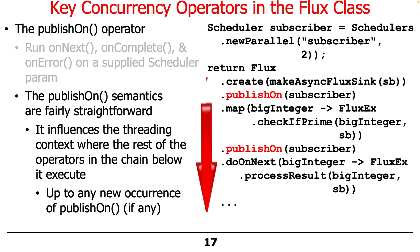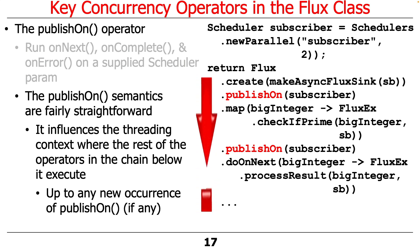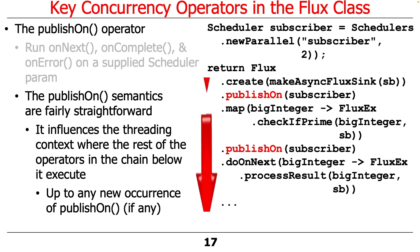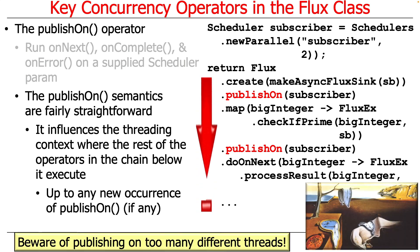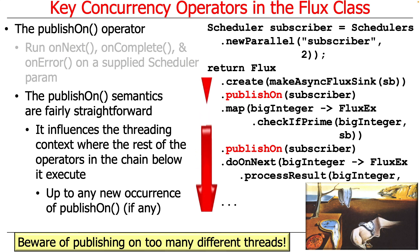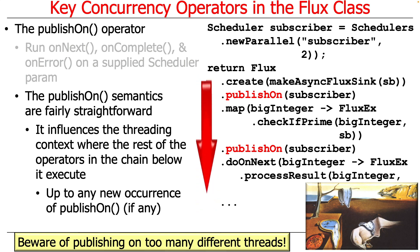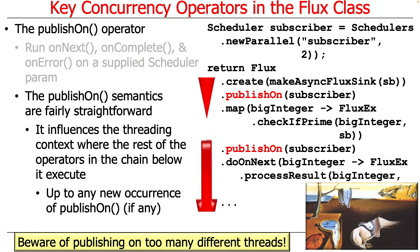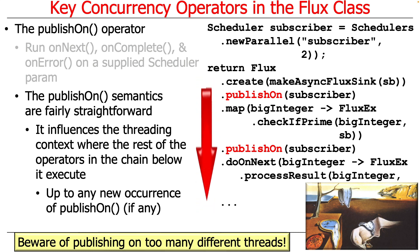Up until the point where yet another publishOn occurs: when you have publishOn, things run in that scheduler context, and if you do another publishOn that'll run in yet a different context. As a general rule of thumb, try not to get too carried away with too many thread contexts for a single stream, because it tends to make things run slower than you might expect due to context switching overhead, memory management overhead, data movement overhead, synchronization overhead, and all these other sources of overhead.